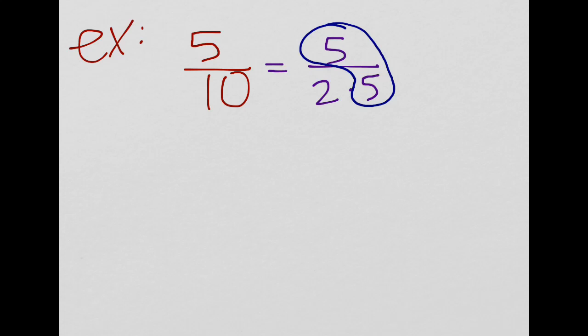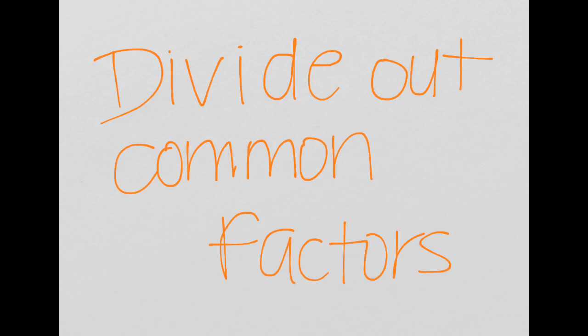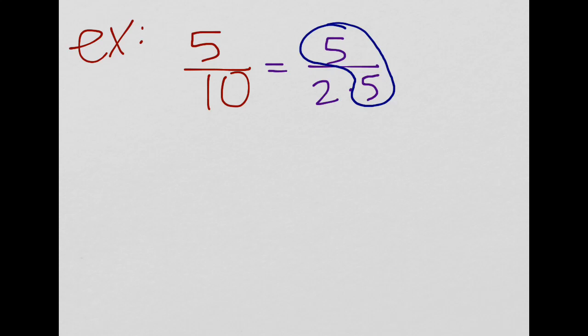So what I'm going to do, as it says, I need to divide out common factors. So I'm going to divide out the two 5's so that I am left with 1 half. So 5 over 10 reduced is 1 half.